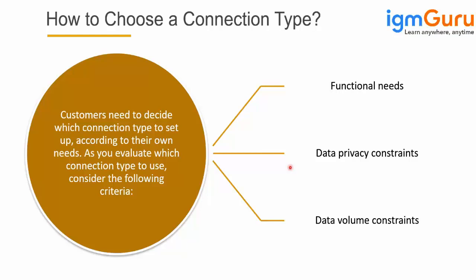How do you decide which connection type to choose? Customers need to decide on a connection type based on different needs. The main criteria could be functional needs, data privacy constraints, or data volume constraints. For example, sales and finance data — some customers don't like to copy it, so in such scenarios you can go for import connections. In scenarios where you are okay to authenticate and send data to another system via remote connections, live connections are preferred. Also, due to GDPR, some customers don't want to copy data, so that influences whether you choose import or live.